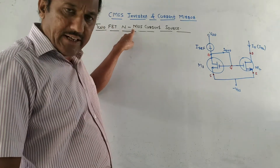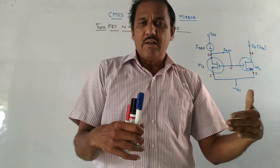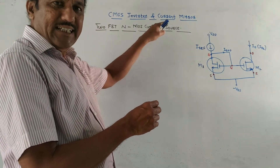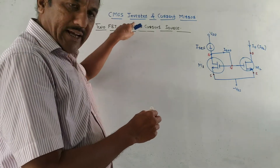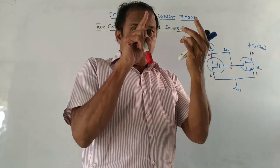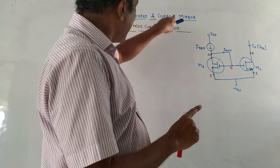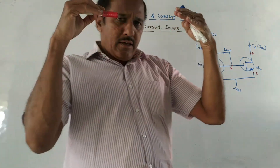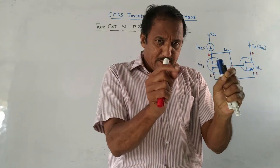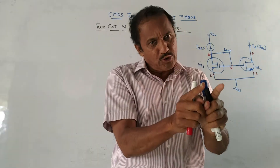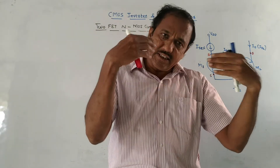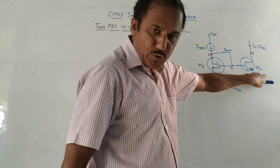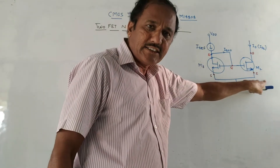The next part is the two-MOSFET N-type MOS current source. Questions related to this may ask you to draw and explain the two-transistor model working as a current source, or draw and explain the basic current mirror. In a current mirror, the output current is the same as the input current. There are two MOSFETs — M1 and M2 — both are enhancement-type N-type MOSFETs.